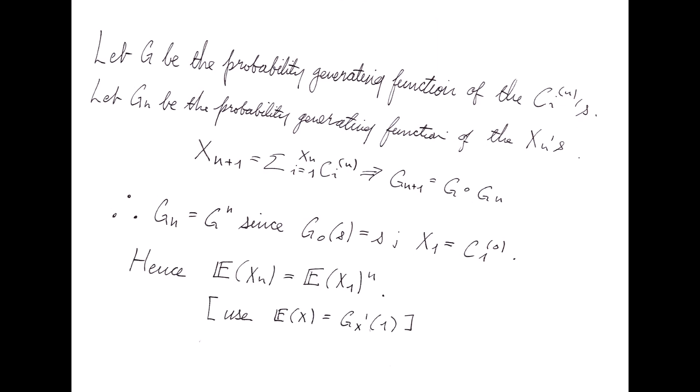With a little bit of algebra and chain rule, we've actually found that the expected population at the nth generation is just the nth power of the expected number of offspring given by a single member.